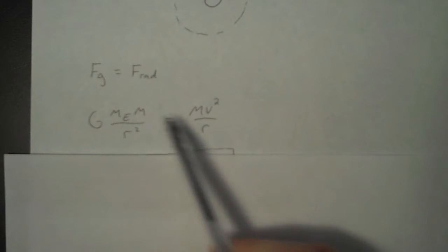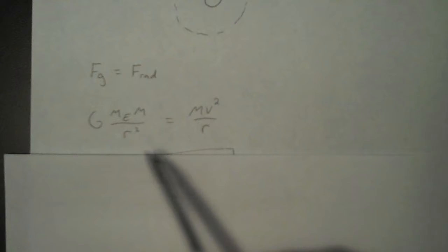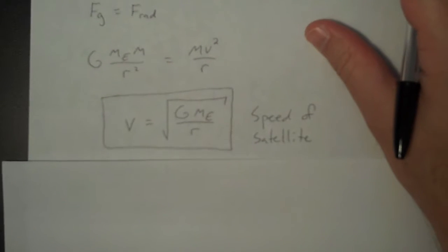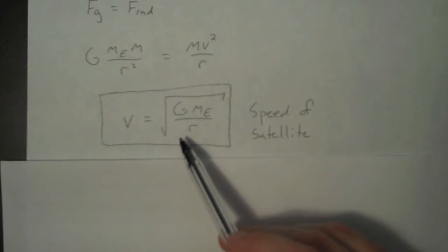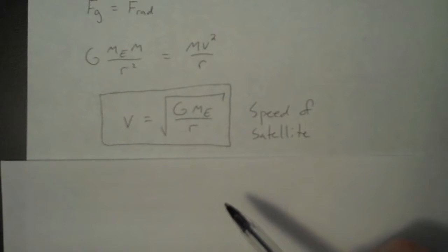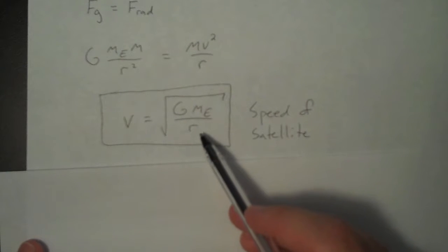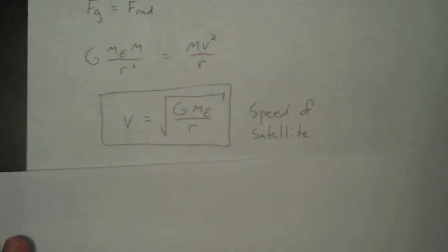Notice the mass values cancel, as does one factor of r. So here is the speed of a satellite in a circular orbit. It's the square root of the gravitational constant times the mass of the Earth divided by the distance from the center of the Earth to the satellite. So that is the speed in a circular orbit.